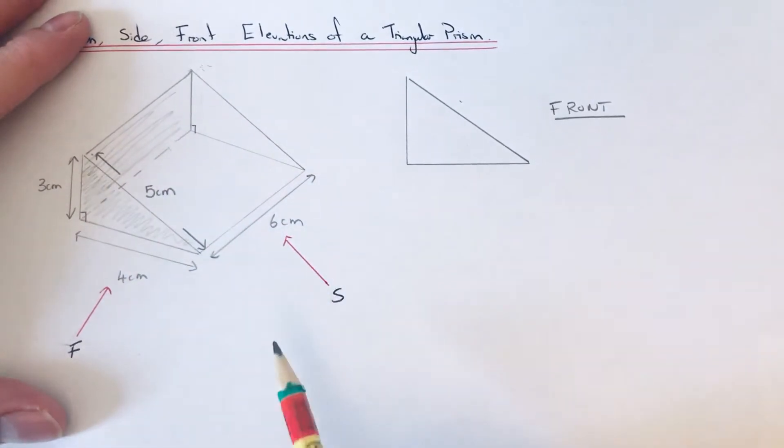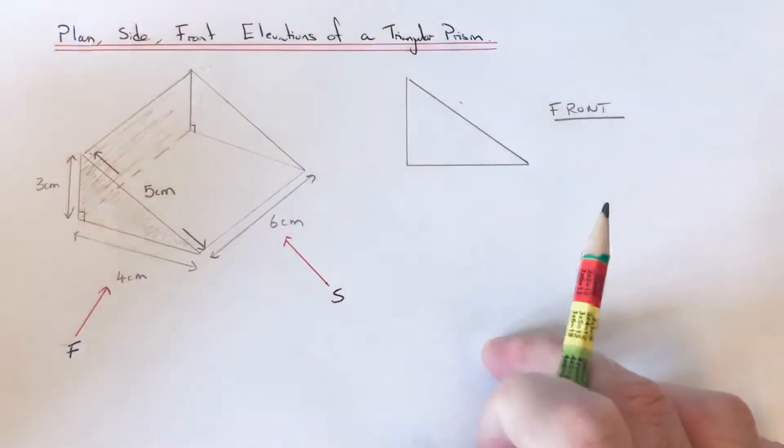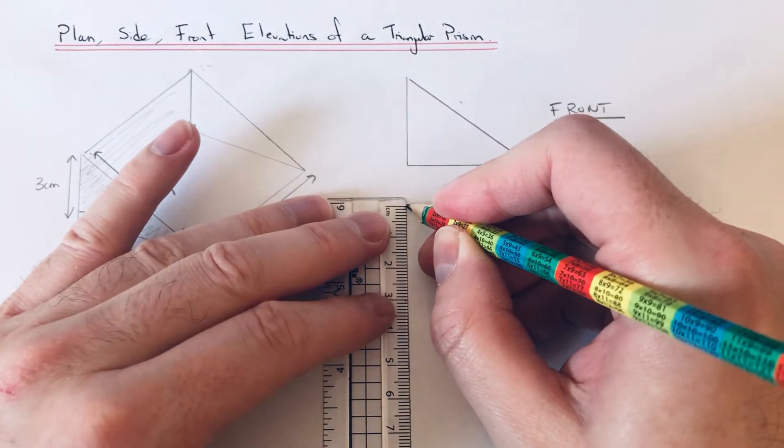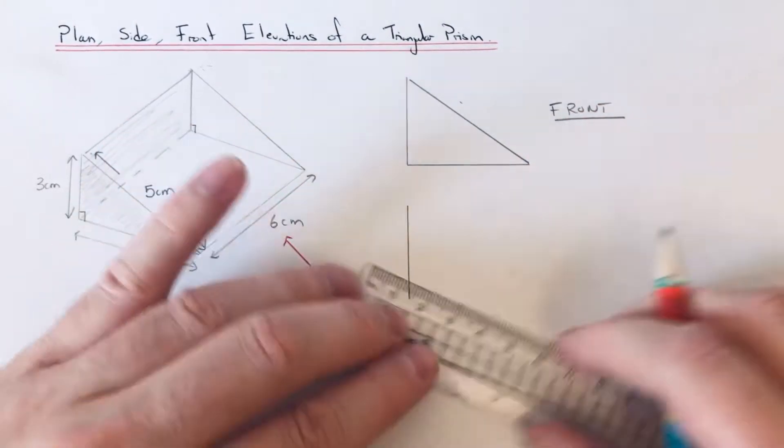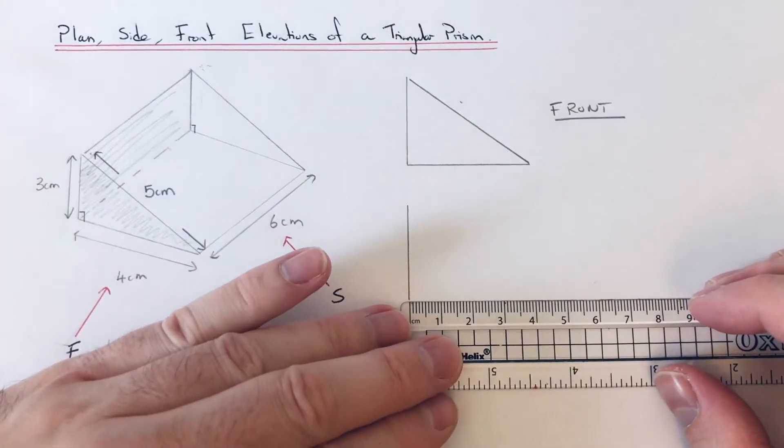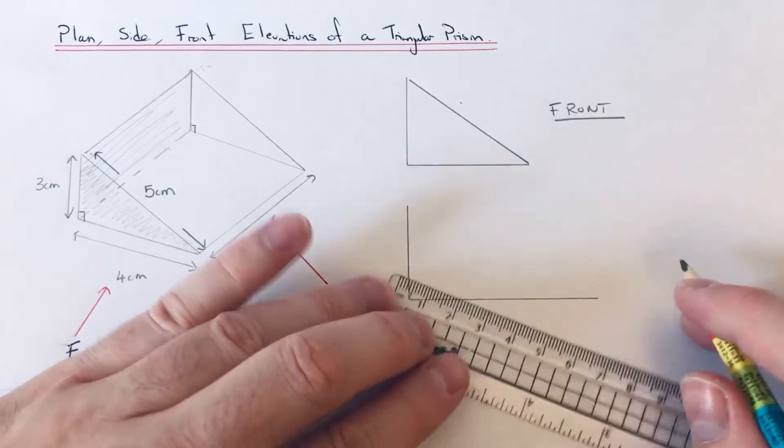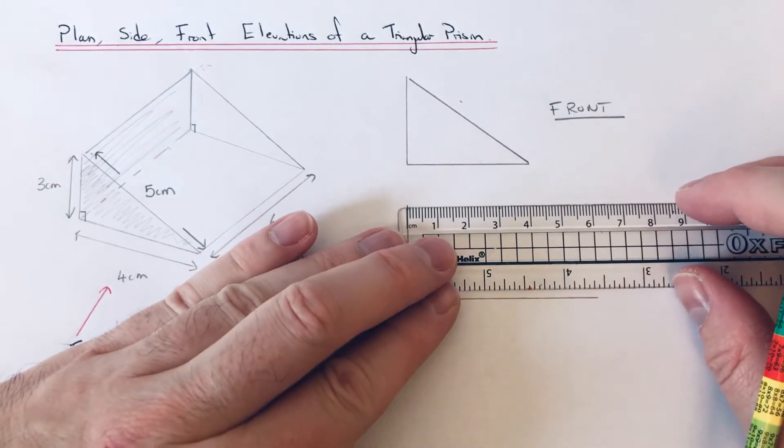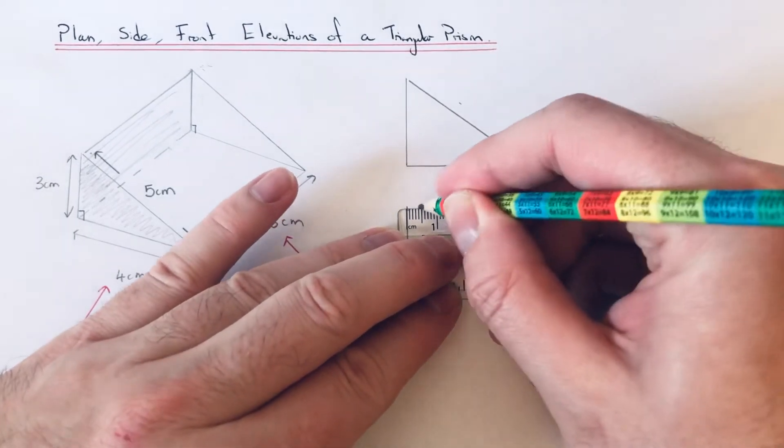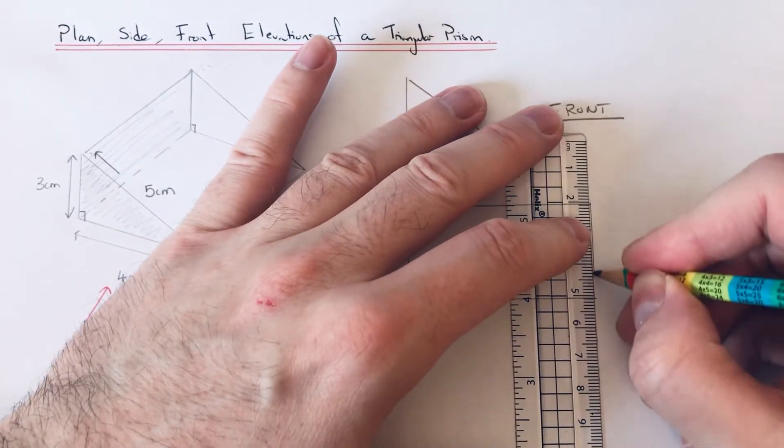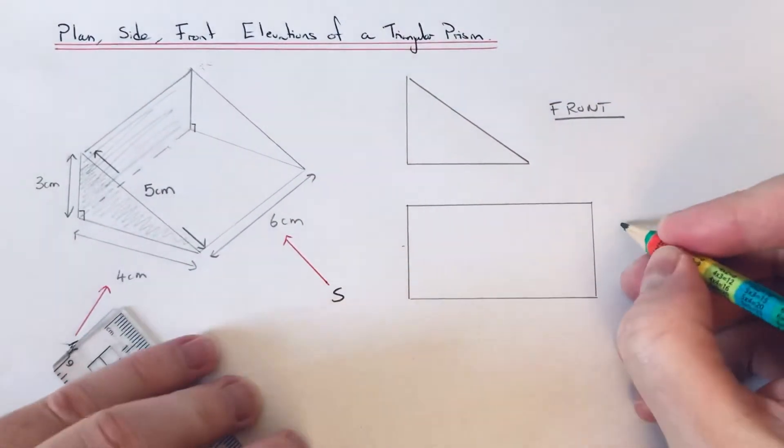This is what you're going to see if you're looking at the side, so I want to go three centimeters up and six centimeters across. You'll find as well in the exam the front and side elevations will be marked because you can actually swap these over as well.